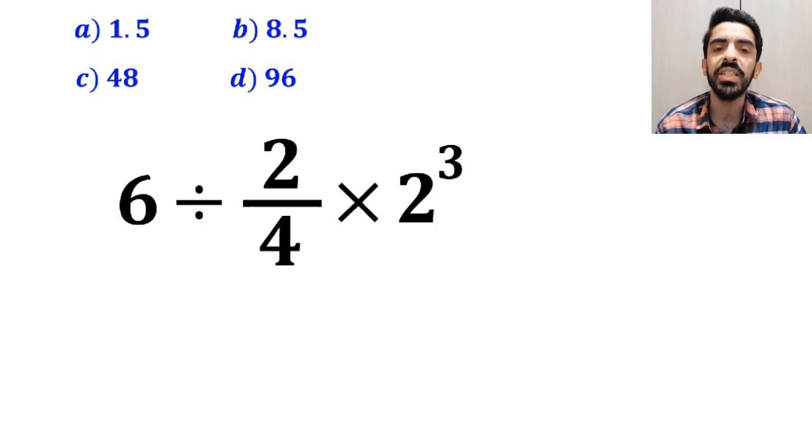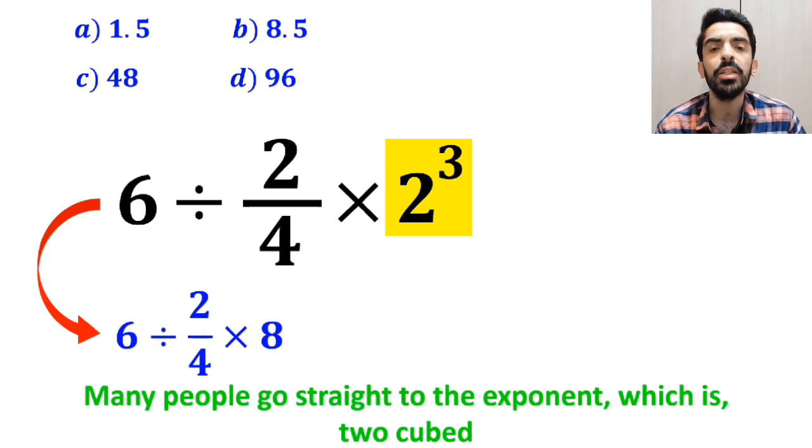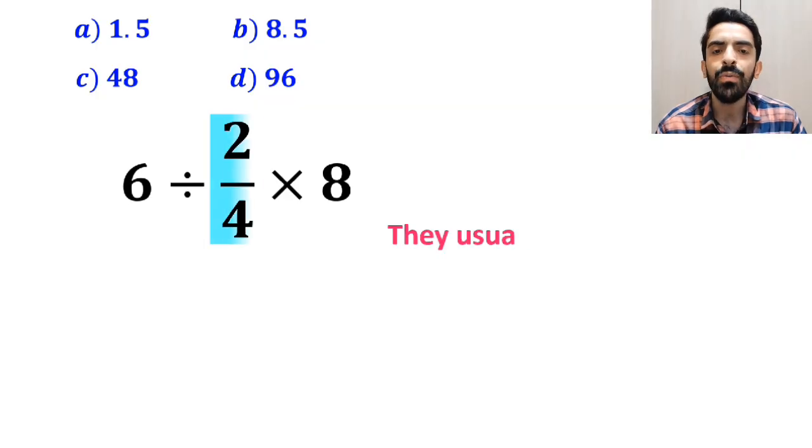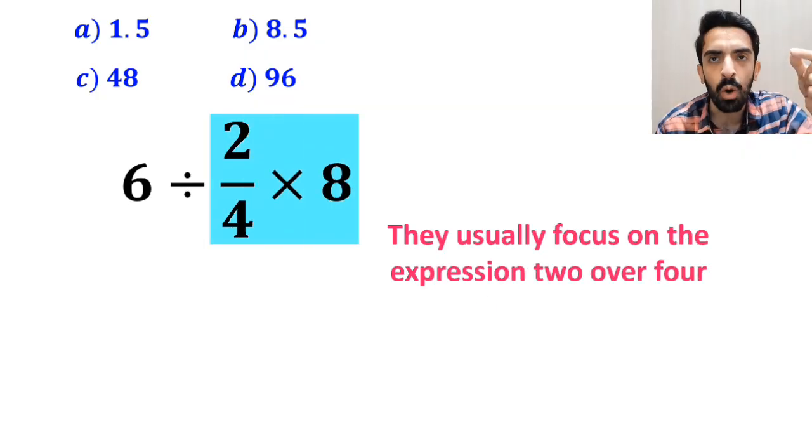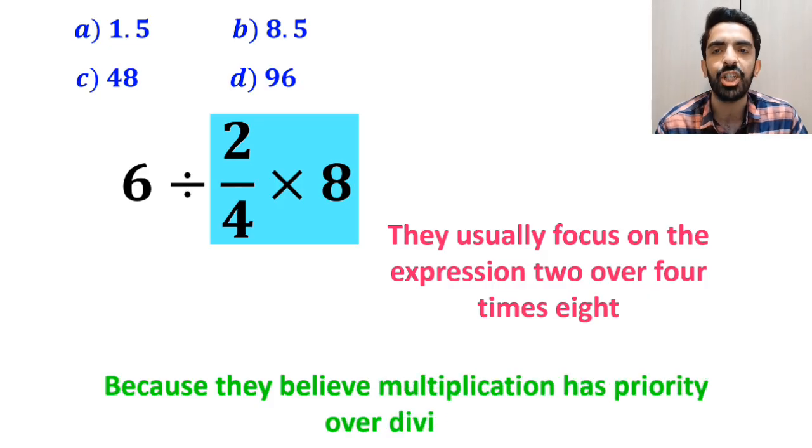When solving this question, most people go straight to the exponent, which is 2 cubed, and simplify the whole expression to 6 divided by 2 over 4 multiplied by 8. In the next step, they usually focus on the expression 2 over 4 times 8, because they believe multiplication has priority over division.